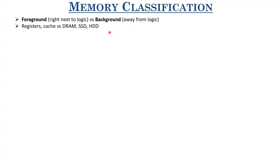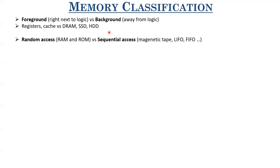There's another classification based on how we can access data from these memory elements — either the data access is random, which is the case for random access memories and read-only memories, or it is sequential access, which is the case with magnetic tapes, last-in-first-out, and first-in-first-out memories. In random access memories, we can access data from any location in one cycle. However, in sequential access memories, we have to take out data serially and wait till the data we want comes out. Random access memories are the ones dominating the market.